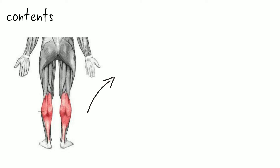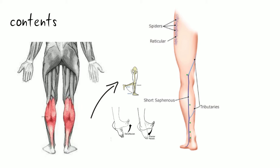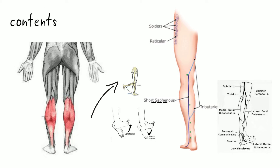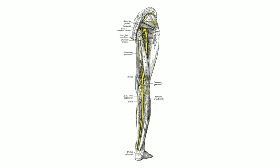It contains the Plantar Flexor muscles, and also contains the Short Saphenous Vein, the Peroneal Communicating Branch of the Common Peroneal Nerve, the Medial Cutaneous Nerve of the Calf, and the Sural Nerve. Its innervation is by the Tibial Nerve.